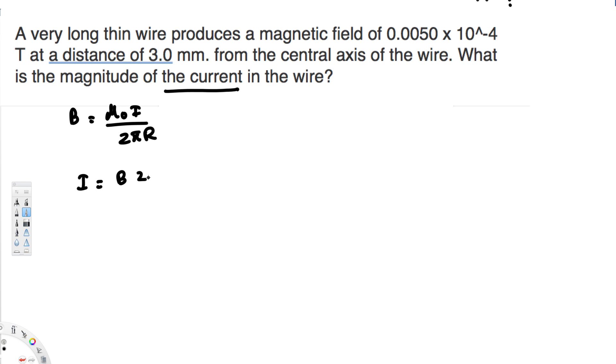I is going to be equal to B times 2πR divided by μ₀. So I is what we are trying to find: B times 2πR divided by μ₀. Let's note down the values first.